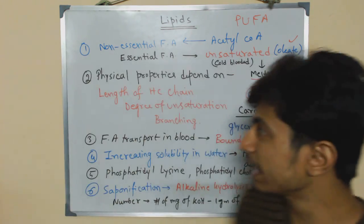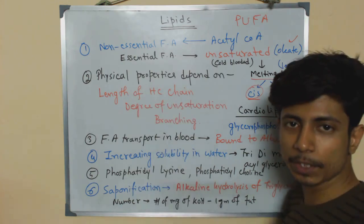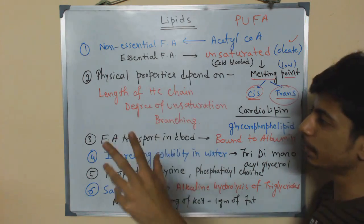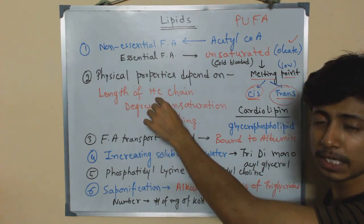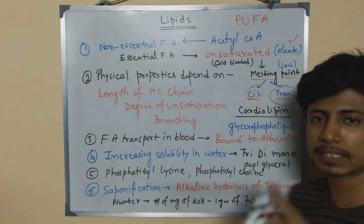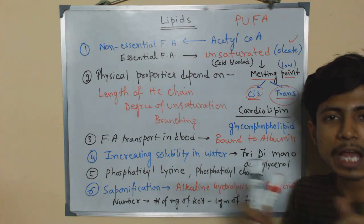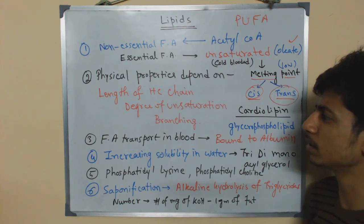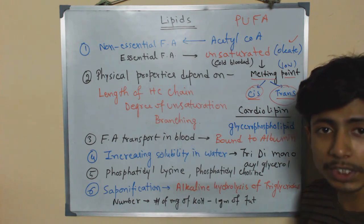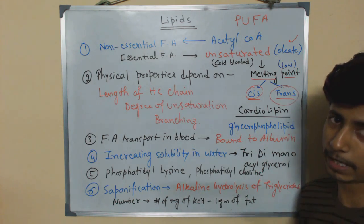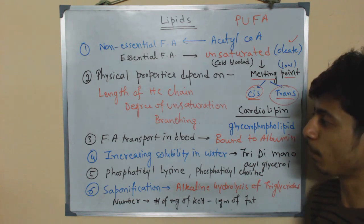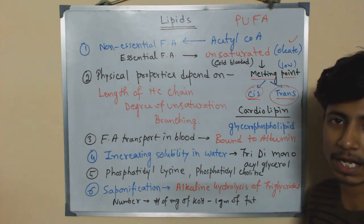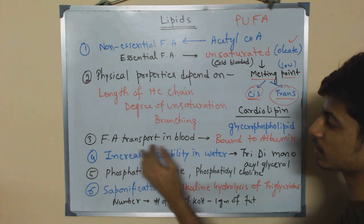The physical properties of fatty acids depend on several factors: the length of the hydrocarbon chain — since fatty acids are essentially a carbon and hydrogen chain — the degree of unsaturation, which affects key properties, and branching, which is responsible for some of the more complex fats found in our body.